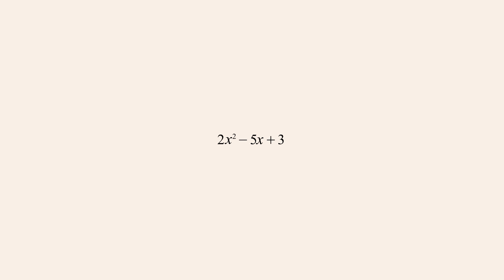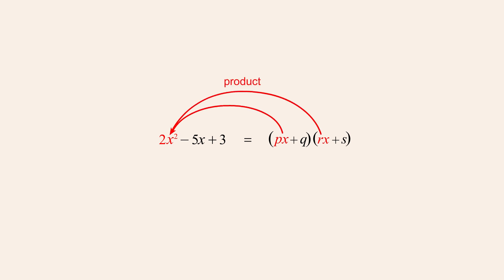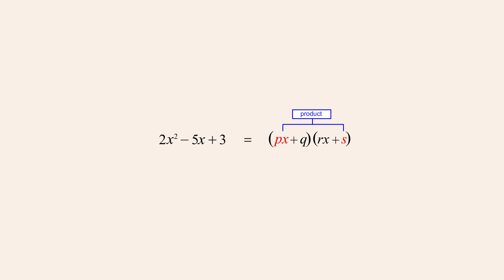To factor this quadratic expression, we wish to find two linear expressions that when multiplied together produce the quadratic. To multiply these linear expressions we use the FOIL method: the product of their first terms, plus the product of their outer terms, plus the product of their inner terms, plus the product of their last terms. The quadratic's x-squared term will be equal to the product of the factors' x-terms, the constant term will equal the product of the factors' constant terms, and the x-term will equal the product of the outer terms plus the product of the inner terms.